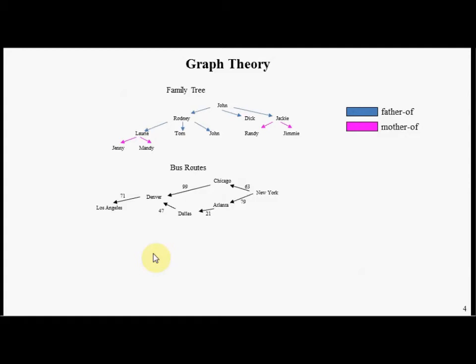We're going to start by doing a little graph theory here. In front of us are two graphs: a family tree and a graph of bus routes. Some of the components of a graph consist of the notion of nodes. In this family tree graph the nodes happen to be the names of people.